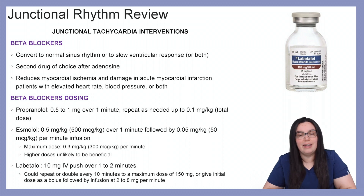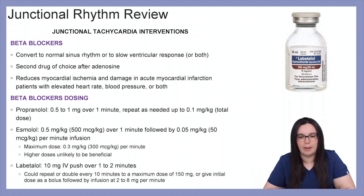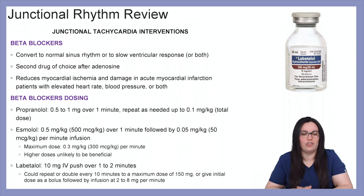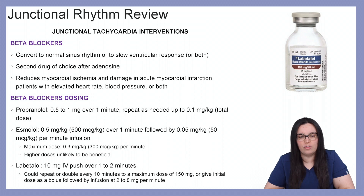Beta blocker dosing differs by medication. Propranolol can be 0.5 to 1 milligram over one minute, repeated as needed up to 0.1 milligrams per kilogram total dose. Esmolol is 0.5 milligrams per kilogram over one minute, followed by 0.05 milligrams per kilogram per minute for infusions, with a maximum dose of 0.3 milligrams per kilogram per minute. Labetalol can be given 10 milligrams IV push over 1 to 2 minutes, repeated or doubled every 10 minutes to a maximum of 150 milligrams, or given as a bolus followed by an infusion at 2 to 8 milligrams per minute.